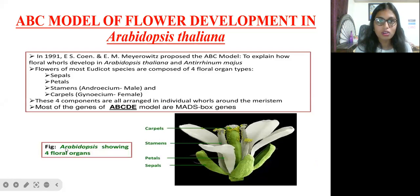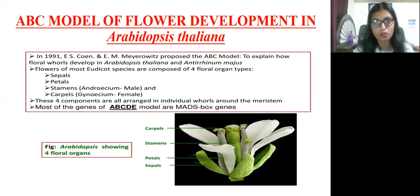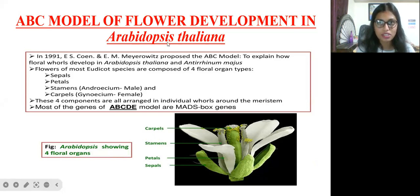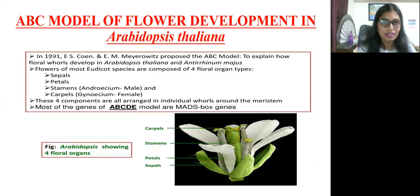What is the ABC model of flower development? In 1991, two scientists were involved in proposing this model. That is E.S. Coen and also E.M. Meyerowitz, who proposed this ABC model of flower development.